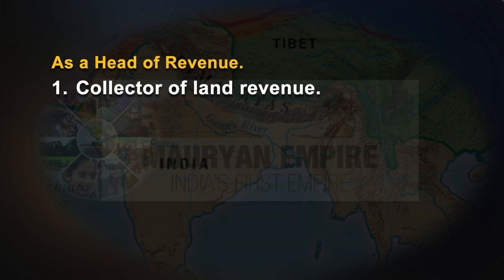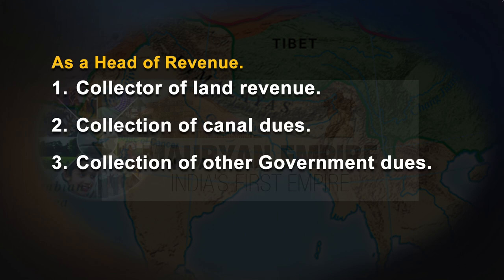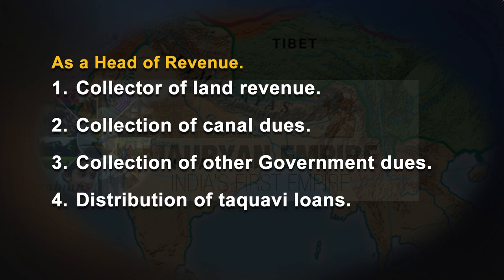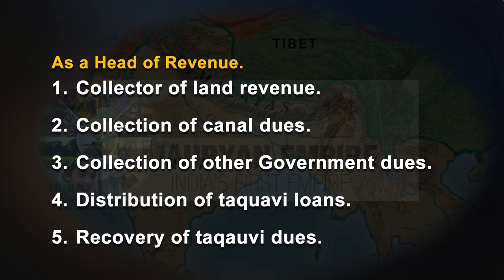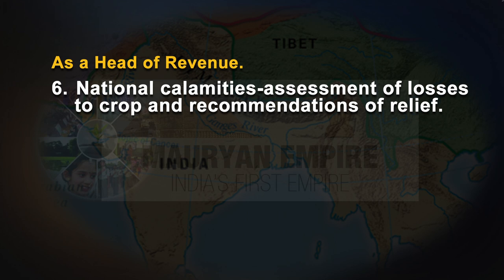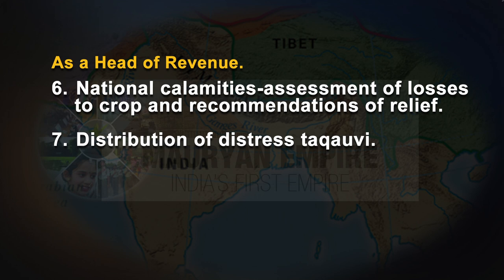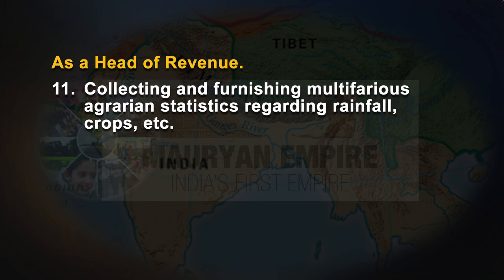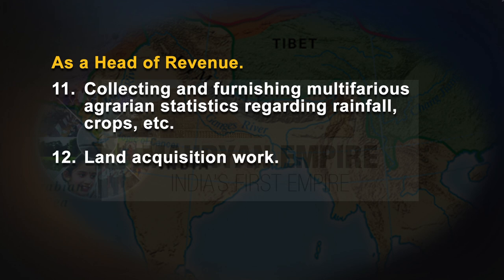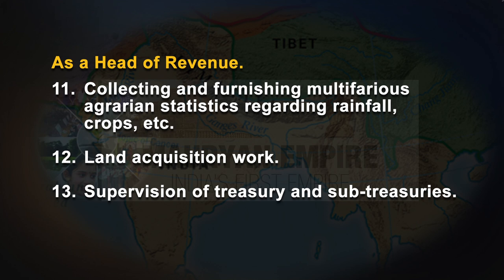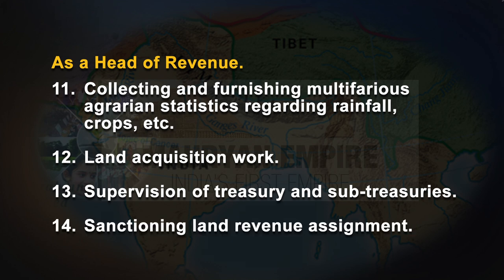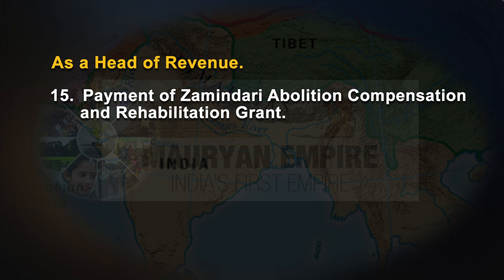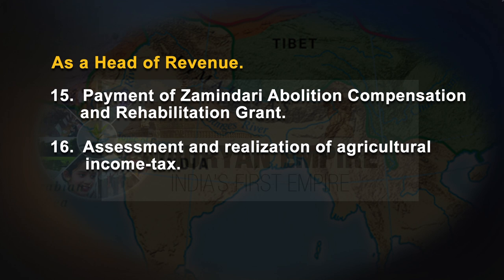As head of revenue: collector of land revenue, collection of canal dues, collection of other government dues, distribution of Taqavi loans, recovery of Taqavi dues, assessment of losses to crops and recommendations of relief during national calamities, distribution of distress Taqavi, relief of fire sufferers, all matters relating to land records, control over land records establishment, collecting and furnishing multifarious agrarian statistics recording rainfall and crops, land acquisition work, supervision of treasury and sub-treasuries, sanctioning land revenue assignments, payment of Zamindari abolition compensation and rehabilitation grants, and assessment and realization of agricultural income tax.